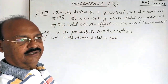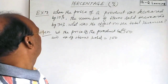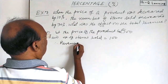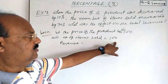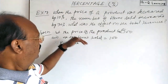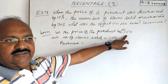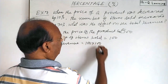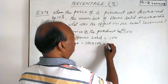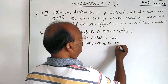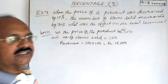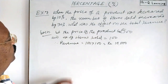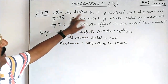So what will be the revenue? Revenue equals cost into number of items. So 100 items are sold at rupees 100 each, and this is equal to rupees 10,000. This is the revenue at this stage.